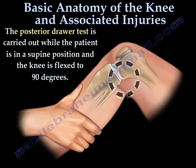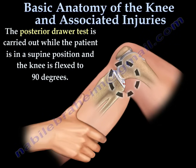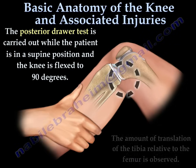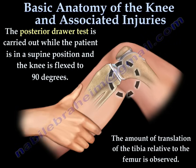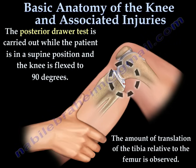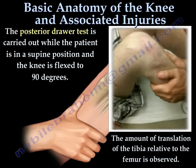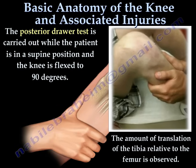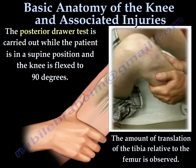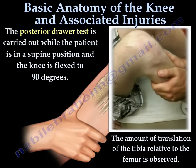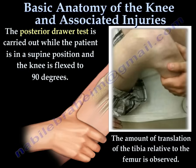The posterior drawer test is carried out with the patient in the supine position and knee flexed to 90 degrees. The examiner applies posterior pressure to the tibia and the test is considered positive if excessive posterior translation of the tibia is shown.